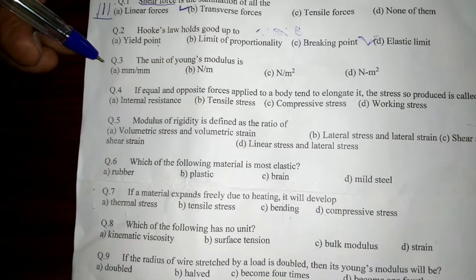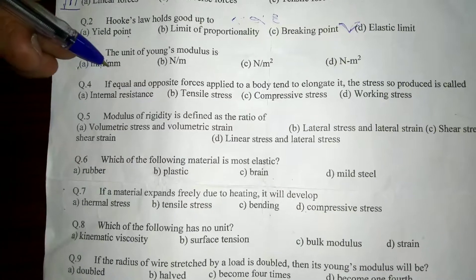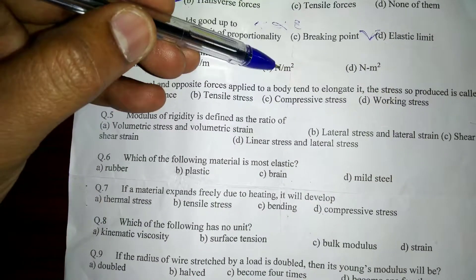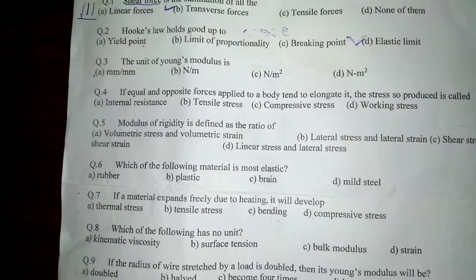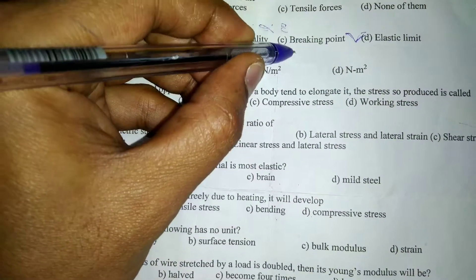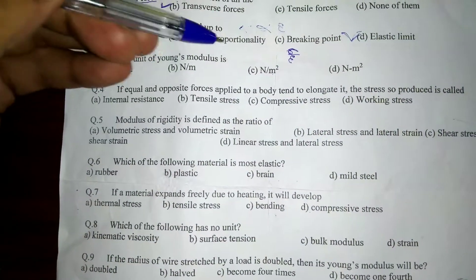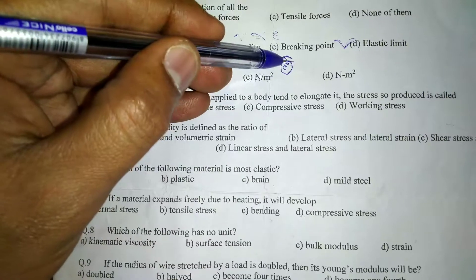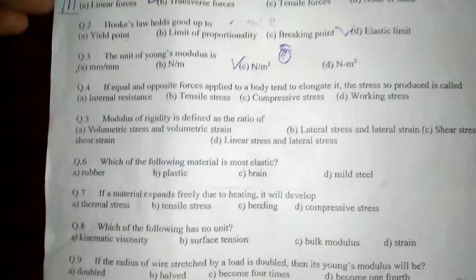The third question: the unit of Young's modulus. Young's modulus is stress divided by strain. The unit of stress is Newton per meter square, divided by strain, which is unitless. So the answer is Newton per meter square, or N/mm², depending on the area—force per unit area.